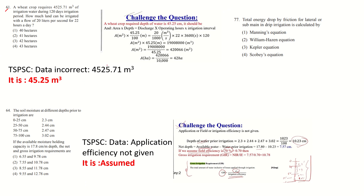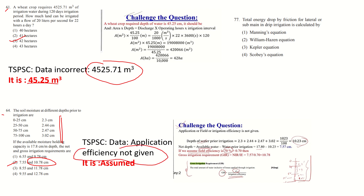Question 61: As I mentioned in a previous video, the data given by TSPSC appears incorrect. The data states 4525.73 cubic meters of water required, but it should be only 45.25 cubic meters. The correct answer should be 42, but TSPSC has marked their answer as correct with insufficient data. If you add the given values you get a net depth of water of 7.55 cm. For gross irrigation, you need application efficiency of 70–85%, but since that is not given, you can challenge this question.